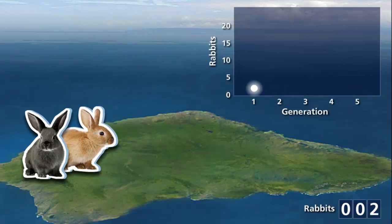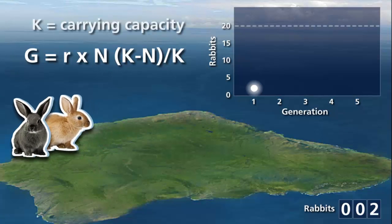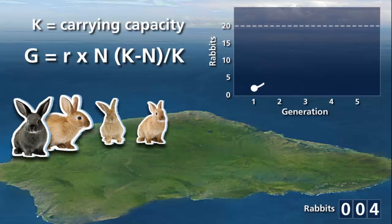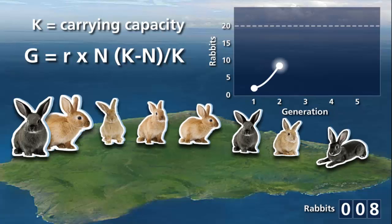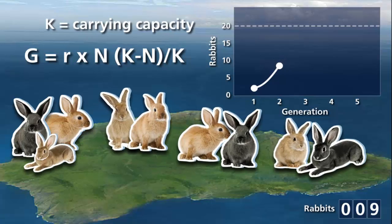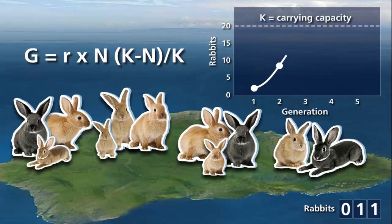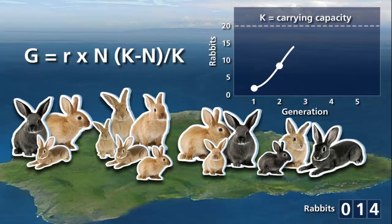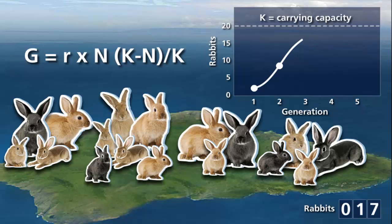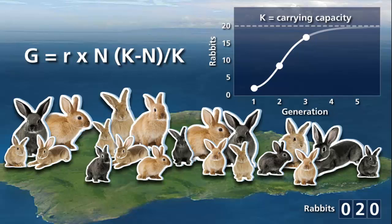Factors other than mating success can also affect population size, G. Carrying capacity, K, is a limiting factor in population growth, as it represents the upper boundary of a population size in a particular environment because of limited resources. As the population begins to grow, resources are not yet scarce, and the population appears to grow exponentially because N is less than K. As the population size approaches the carrying capacity — in this case 20 rabbits — fewer offspring survive to adulthood, and the rate of growth, R, decreases as N approaches K. This is called logistic growth and is represented by a log curve on a graph. Eventually, the population will stabilize at the carrying capacity of the environment, when N equals K and R is zero.